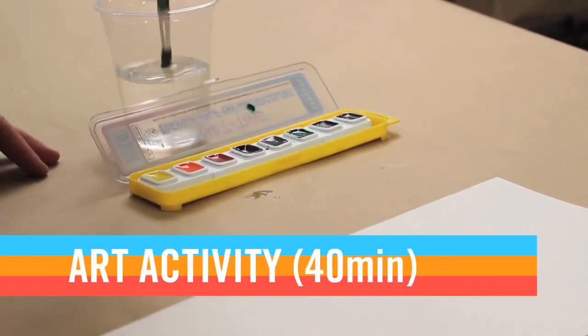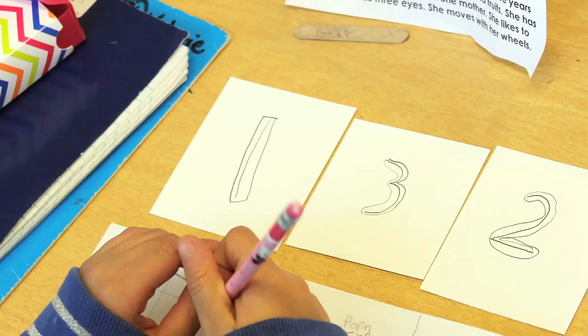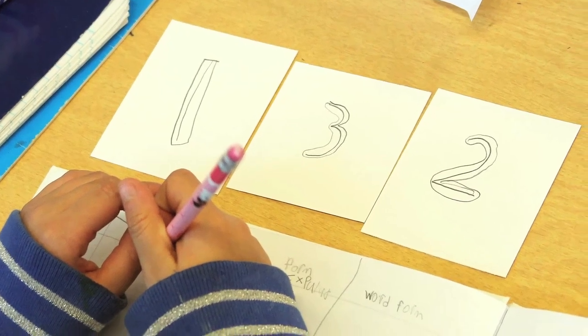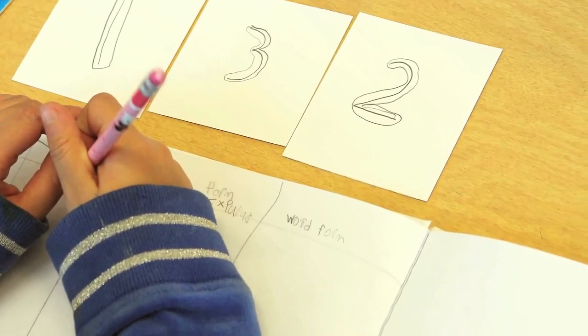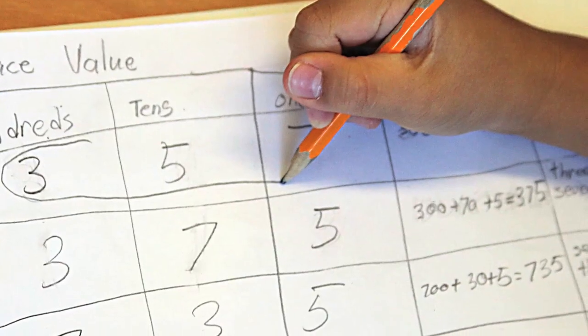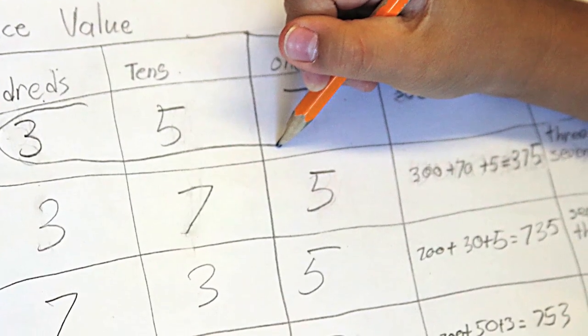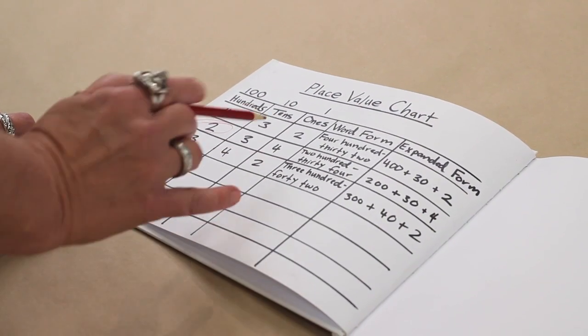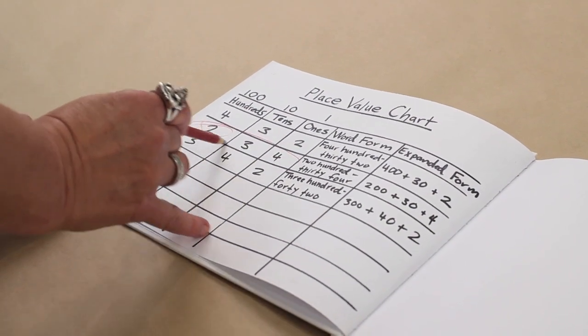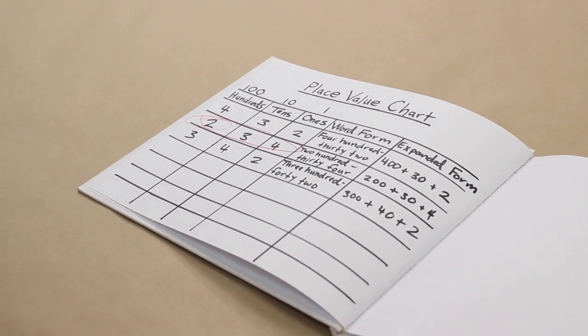Before we start the art activity, it's important to keep in mind that numbers higher than 199 will be very difficult for students to complete in just one session if they're working alone. For numbers greater than 199, it's a good idea to have students work in pairs or in groups. Now, let's make a place value sculpture that represents the three digit number chosen by your students in the warm up activity.